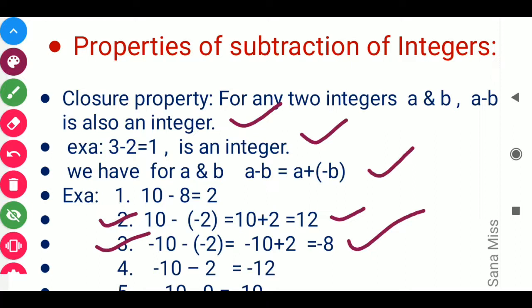In subtraction, subtract the smaller number from the bigger number — that gives 8 — and always give the sign of the bigger number. Here the bigger number is 10, which has a minus sign, so the answer is minus 8. For example 4, minus 10 minus 2: when both signs are minus, simply add them to get 12 and keep the minus sign, giving minus 12.